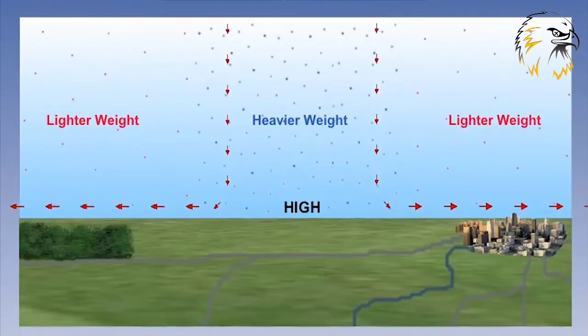We can now summarize that air within a high pressure descends and diverges. This movement can be achieved in two main ways. These different ways define what type of high pressure it is.